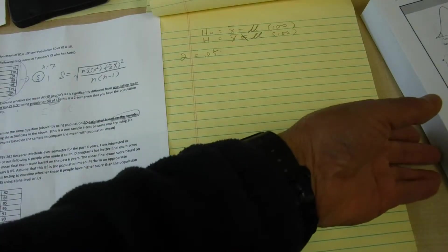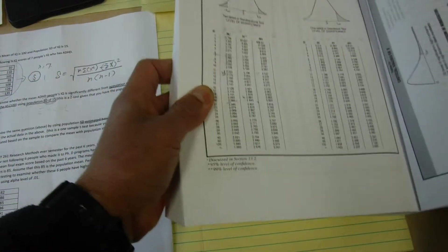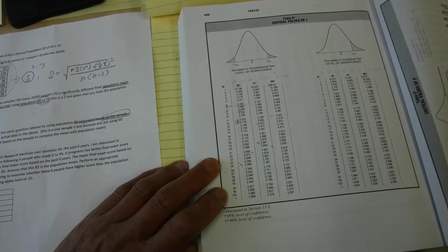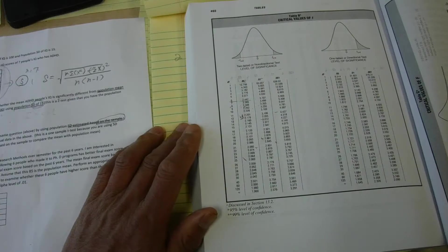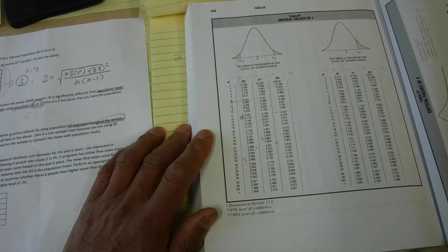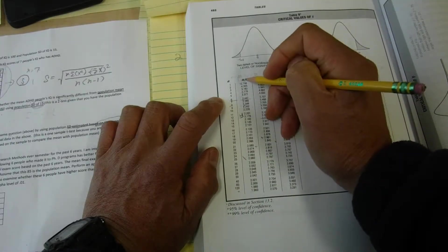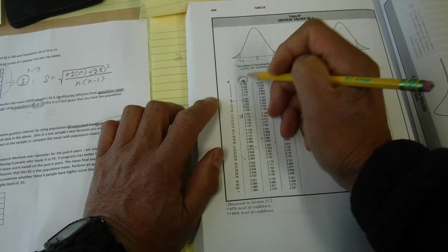So in order to get to t-test, t-table, this is the t-table. So we have based on the alpha level, we have to get a critical t-value. The critical t-value can be given by, we already know the alpha to be 0.05.